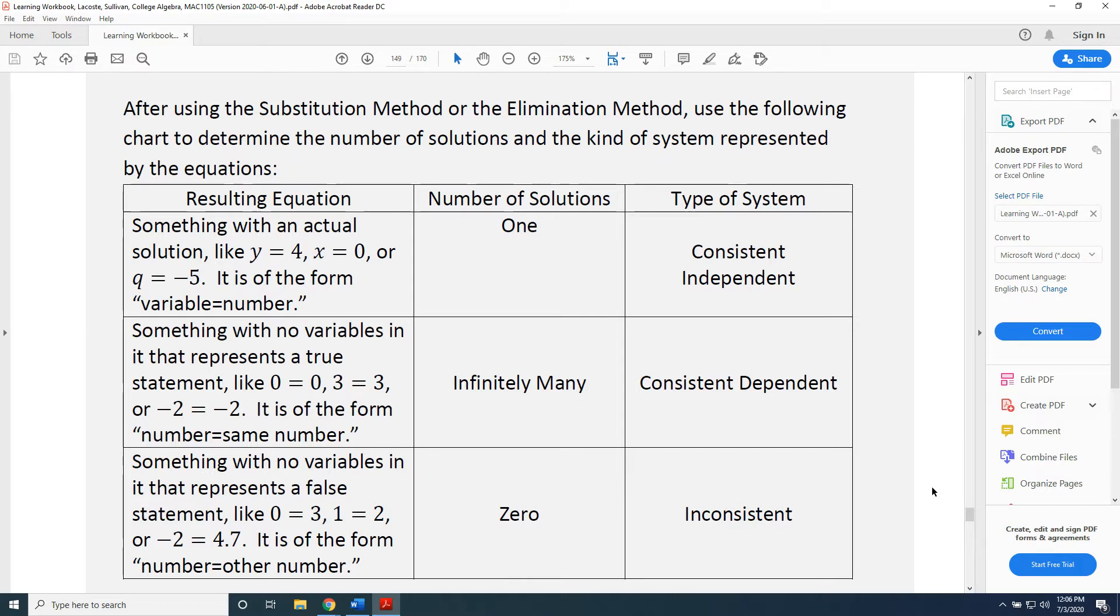Parallel lines, which have no solution to the system, or coincident lines, which have infinitely many solutions to our system. The following chart gives us some information about the number of solutions and the kind of system represented by the equations when we see them in our problems. Let's look at this together.